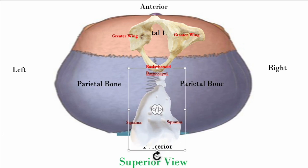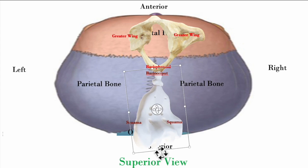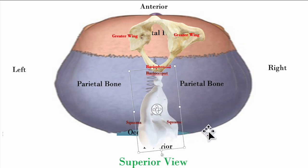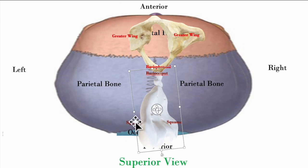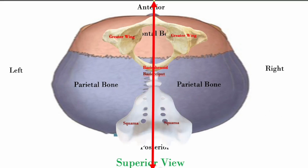To compensate, the occipital squamous on the right side moves inferiorly. You can see the occipital squamous on the right moving inferiorly while the opposite happens on the left: the left greater wing moves inferiorly toward the feet, and the left occipital squamous moves superiorly. This is what a right torsion looks like; a left torsion would be exactly the opposite.